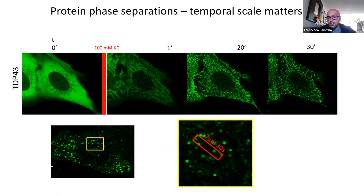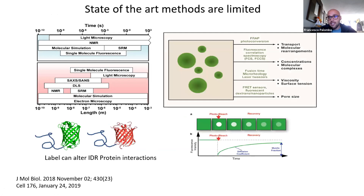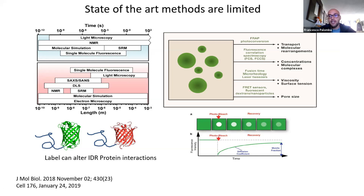The characterization of things that are moving requires high spatiotemporal resolution, and the method we are proposing provides this. The state-of-the-art methods are limited because their spatiotemporal resolution is not great. One of the best methods is fluorescence microscopy — it can be very fast, non-invasive, and can provide very high spatial resolution. However, state-of-the-art techniques like FRAP are very invasive, cannot provide much information at the nanoscale, and also require labeled proteins. It is well known that proteins tagged with fluorescent proteins can behave slightly differently than unlabeled proteins.